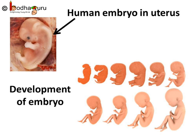After fertilization, the zygote grows into an embryo, and the embryo keeps on growing and turns into a full-fledged human being inside the uterus. This means the baby stays in the uterus of the mother.